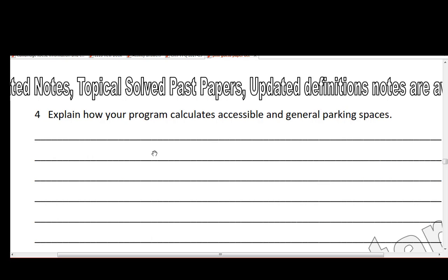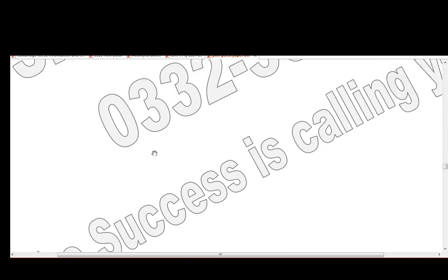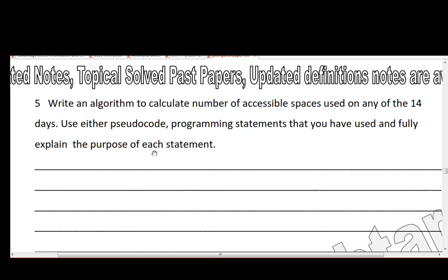Question 4: explain how your program calculates accessible and general parking spaces — in text, in your own words. Next, write an algorithm to calculate the number of accessible spaces used on any of the 14 days, related to task 3. Use either pseudo code or programming statements and fully explain the purpose of each statement.